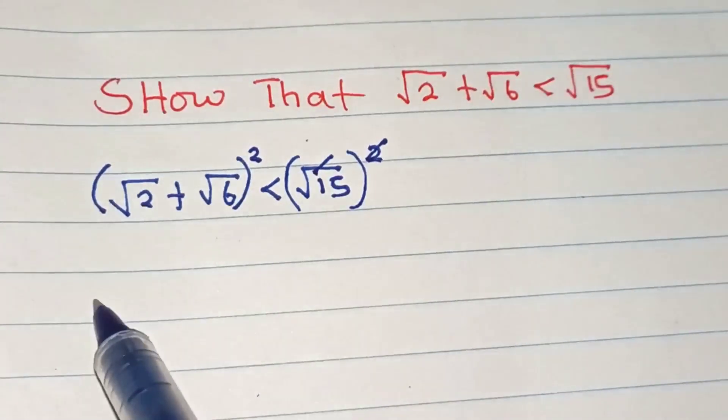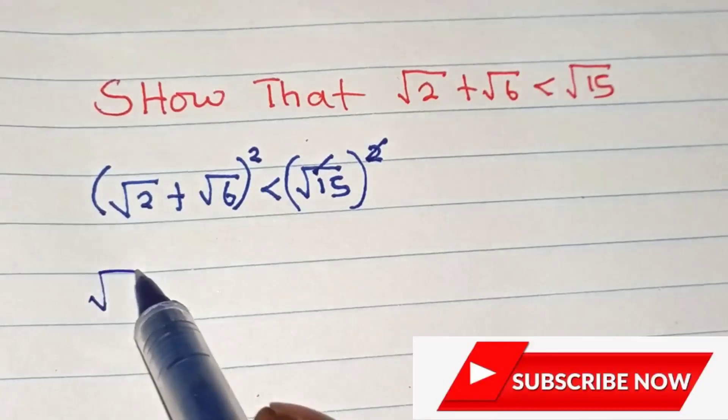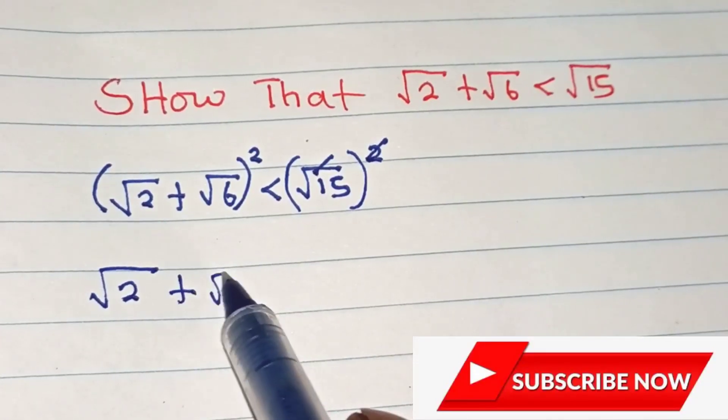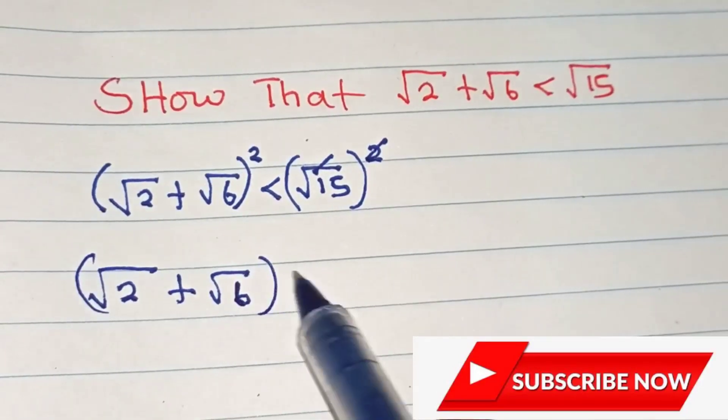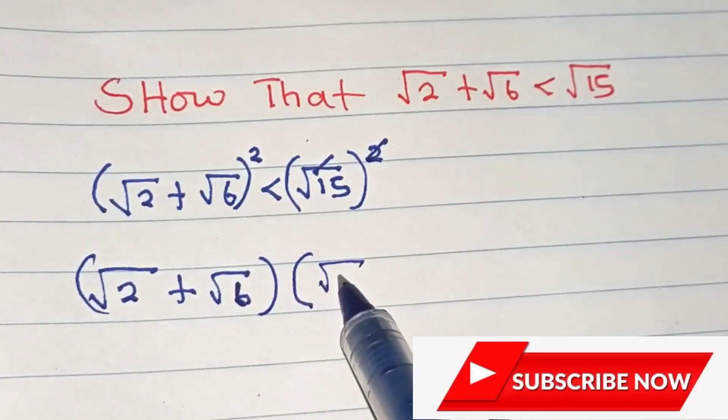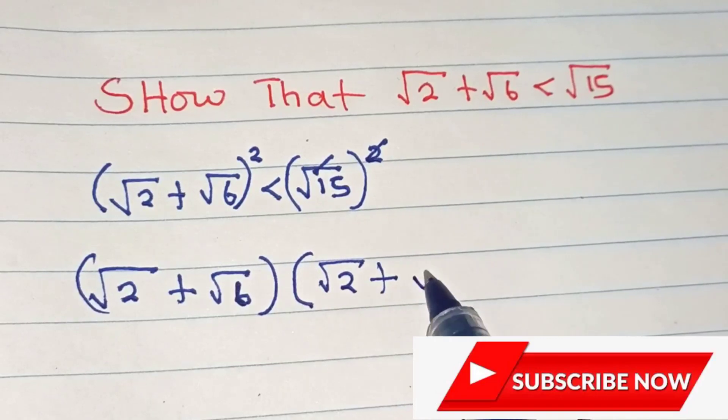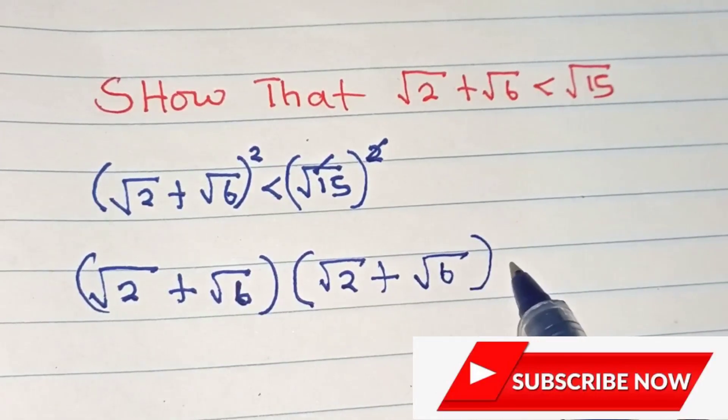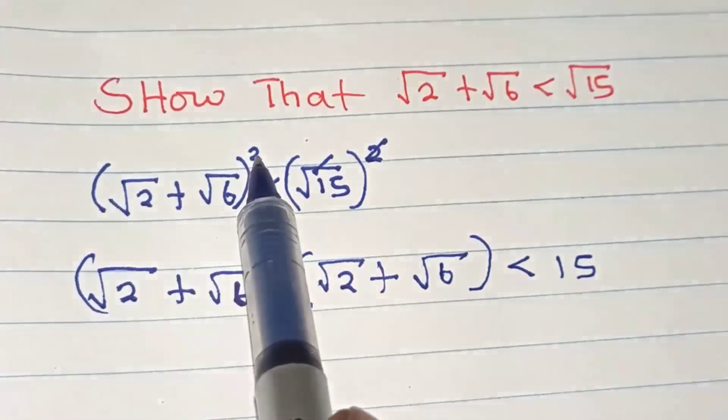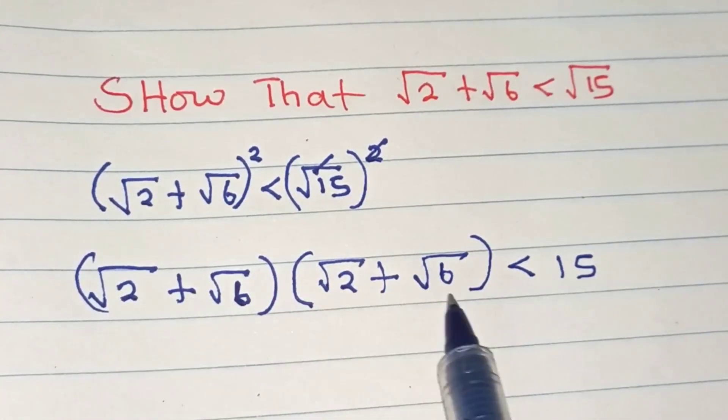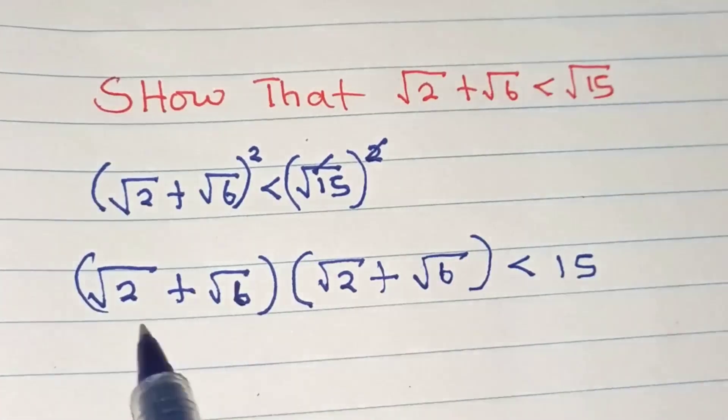We have root 2 plus root 6, and this is less than 15. Since we have a square sign here, we need to expand the bracket.